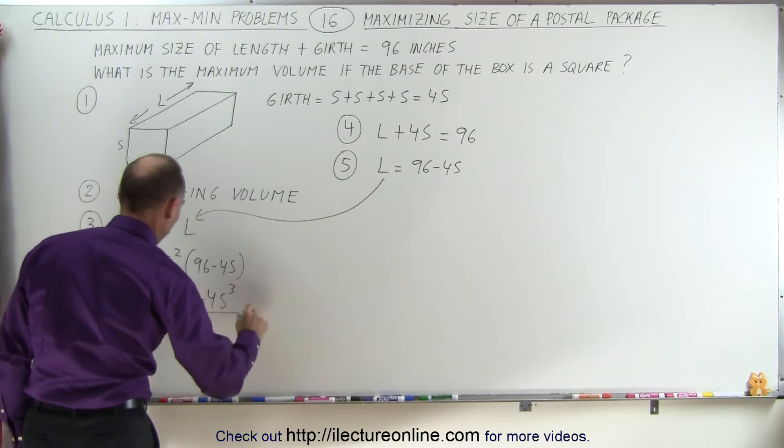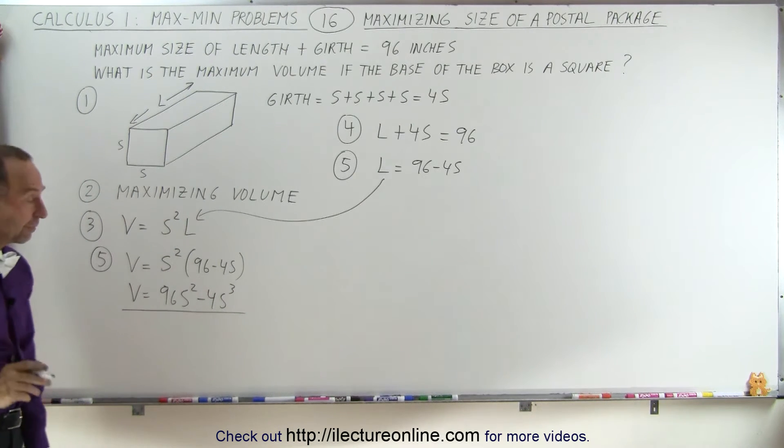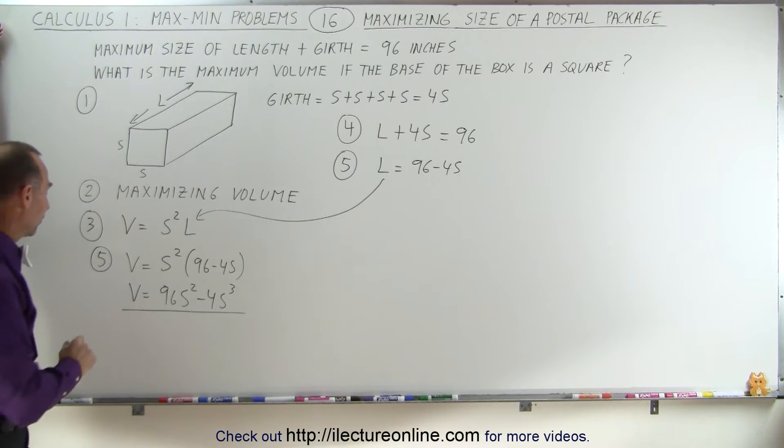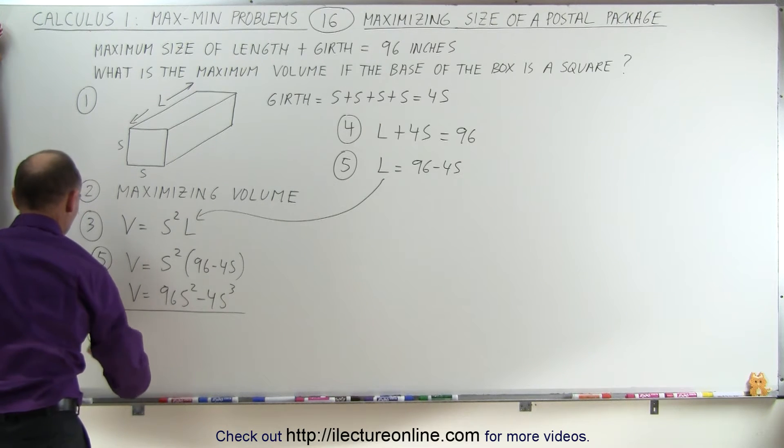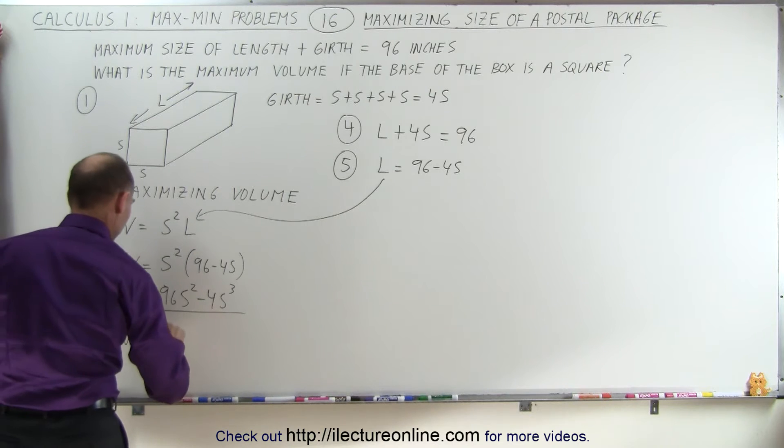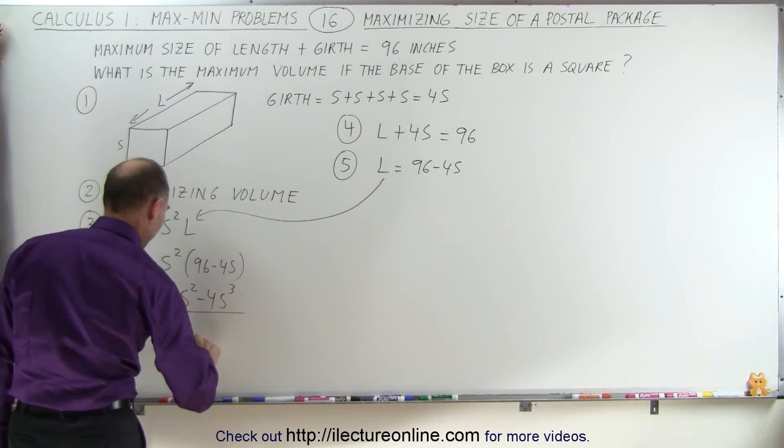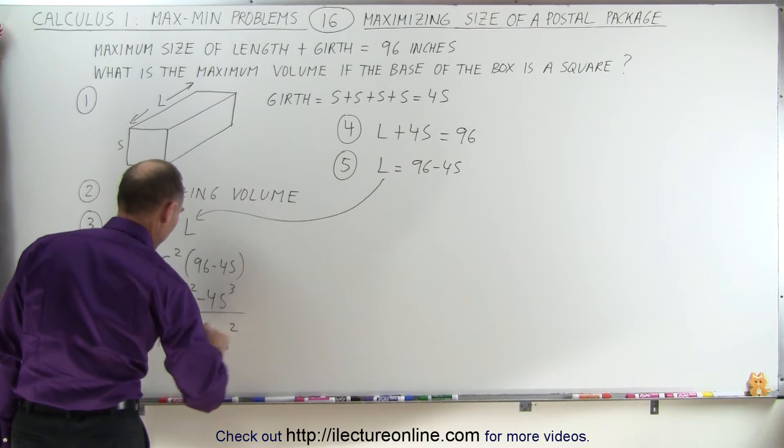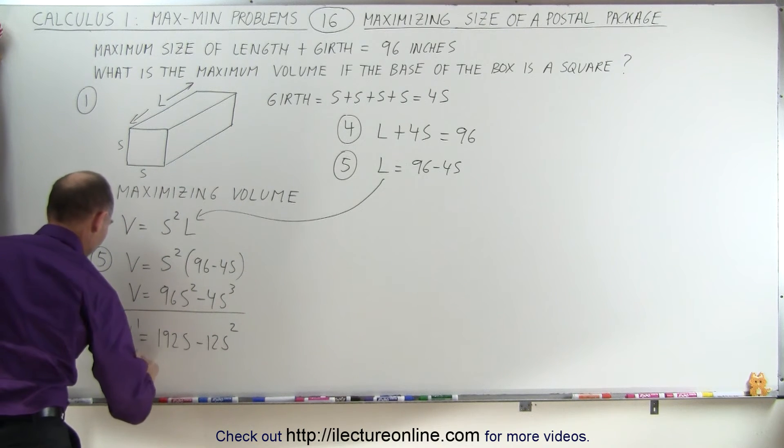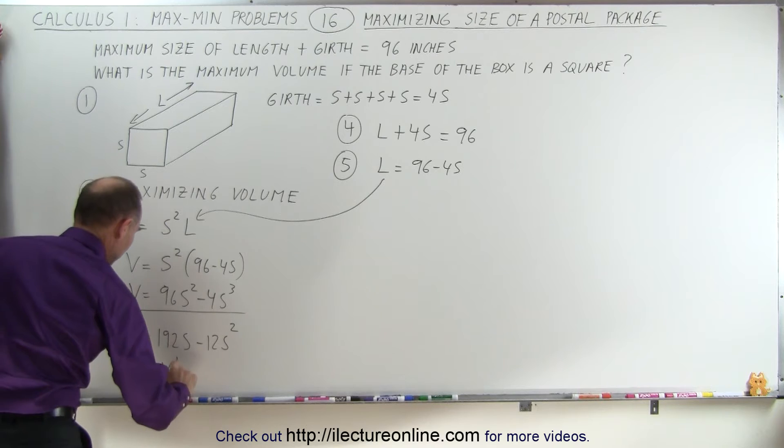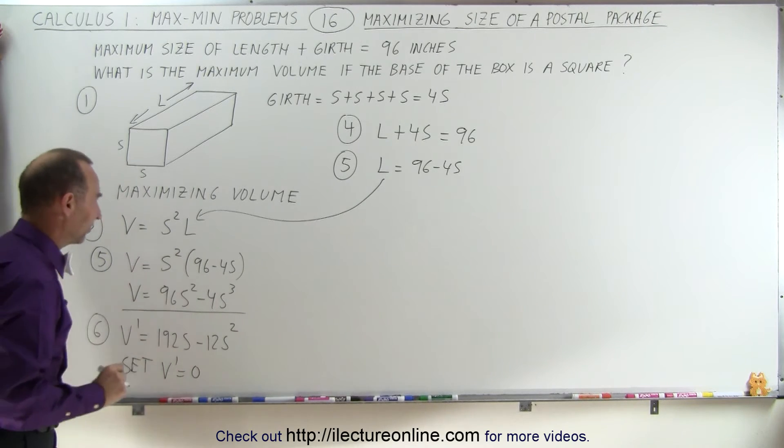For step 6, we take the derivative and set it equal to zero. V' = 192s - 12s². We set V' = 0 to solve for s.